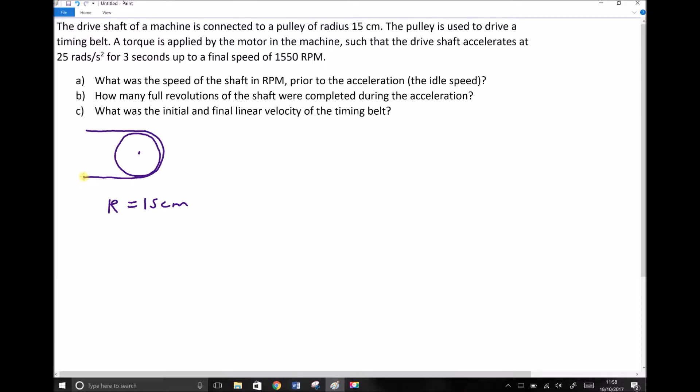It then goes on to say a torque is applied by the motor in the machine such that the drive shaft accelerates at 25 rads per second squared. So it's given us the angular acceleration of our drive shaft which will also be the angular acceleration of our pulley and that is 25 rads per second squared.